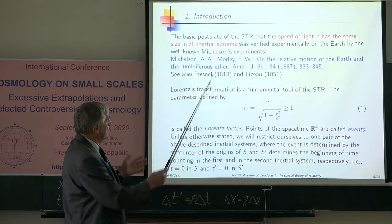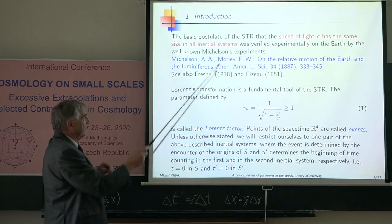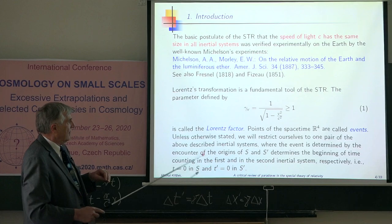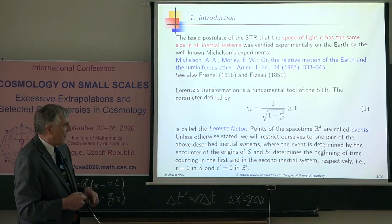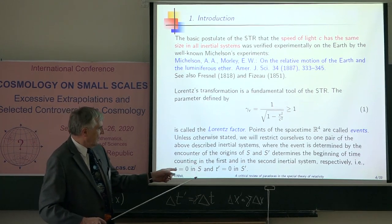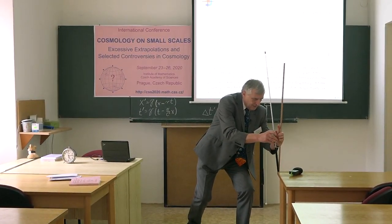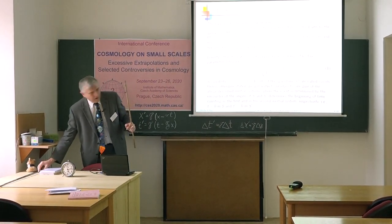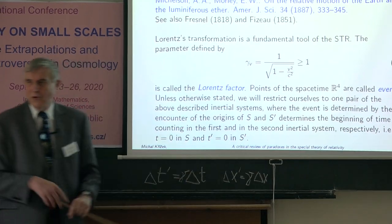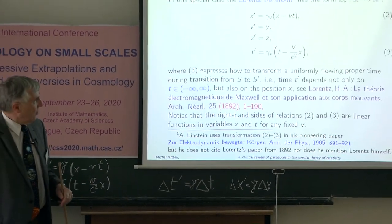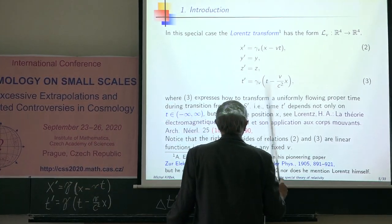The basic postulate of special theory of relativity says that the speed of light c has the same size in all inertial systems. It was verified by Michelson. Then I introduce the standard Lorentz factor. Everybody knows that this is always greater or equal than one. When I have two systems, and when the origins of these systems collide, then I start, then I put t equal to zero and t prime equal to zero. Then in this special case, the Lorentz transformation has the following form. This formula is here, this formula is here. And these do not change.